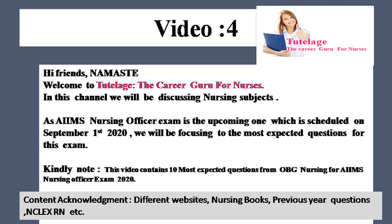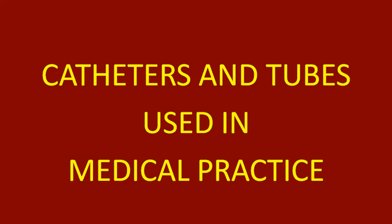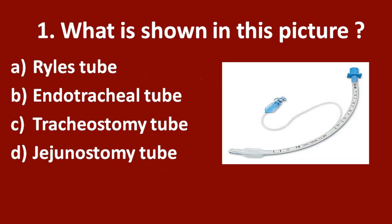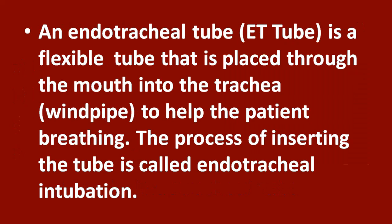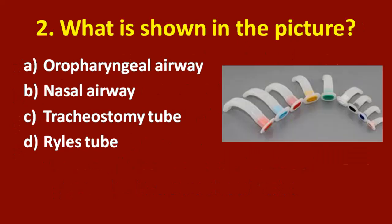Hello friends, welcome to another new video. In this video we will be discussing various catheters and tubes used in medical practice. First question: what is shown in this picture? Option A: Ryle's tube. Option B: endotracheal tube. Option C: tracheostomy tube. Option D: jejunostomy tube. The correct answer is option B, endotracheal tube. An endotracheal tube or ET tube is a flexible tube placed through the mouth into the trachea or windpipe to help the patient in breathing. The process of inserting the tube is called endotracheal intubation.